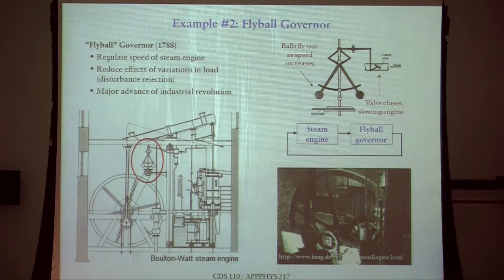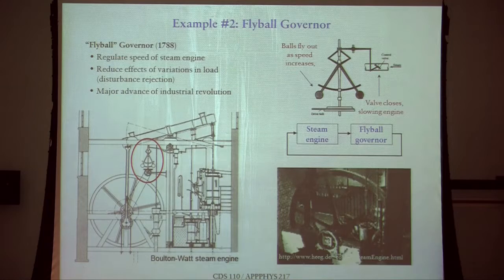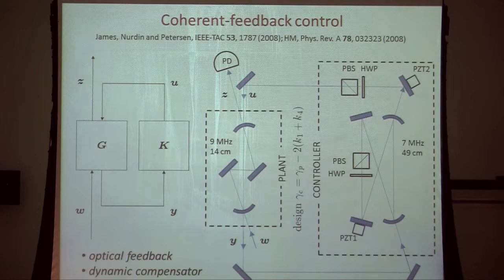In the Watt governor, both the controller and the plant are made of the same kinds of mechanical parts — a primitive example from before electrical circuits and computers. But as we look forward to quantum technologies and nanotechnology, we're actually going back to this scenario: we want controllers that regulate nanoscale quantum processes to be made from nanoscale quantum parts, so everything can be embedded at the nanoscale.